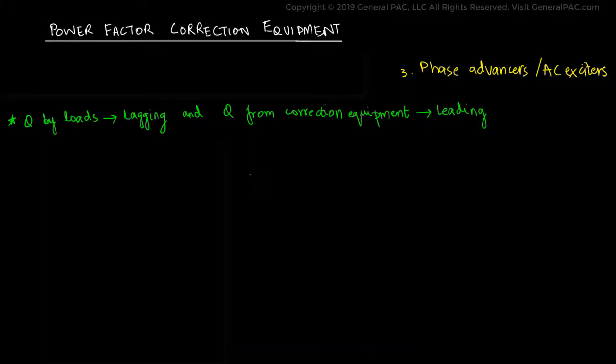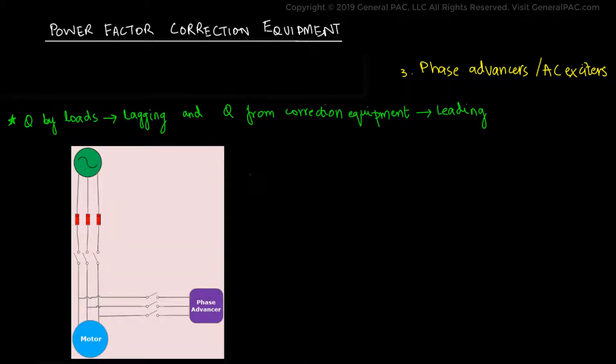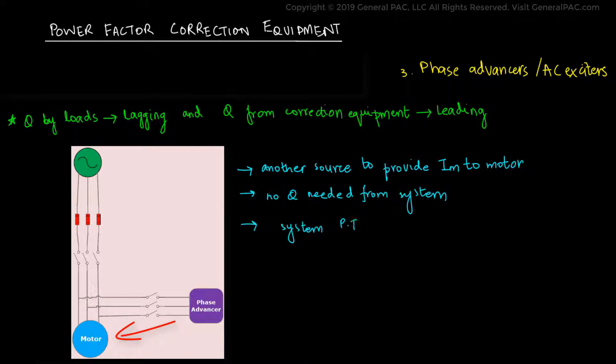Now, a third way to improve the power factor is to use a phase advancer. Since inductive loads like the induction motor operate by drawing reactive current from the system, what if we were to provide it with another source to provide the required reactive current? This is where phase advancer comes into play. It provides a reactive excitation current for the motors which relieves the system of any reactive power factor requirement and thus improving the power factor.